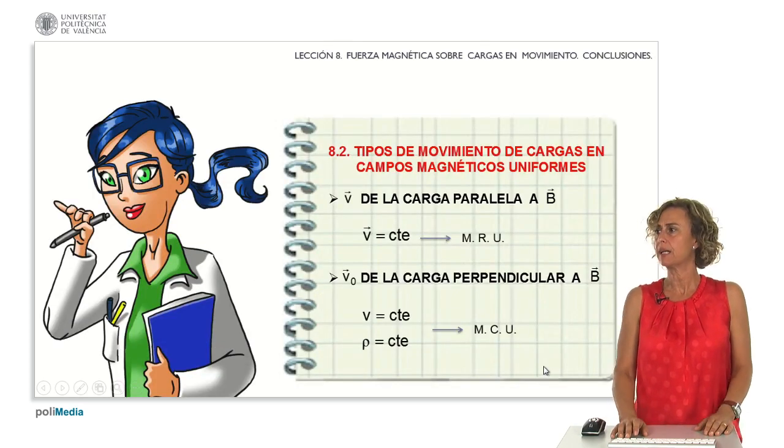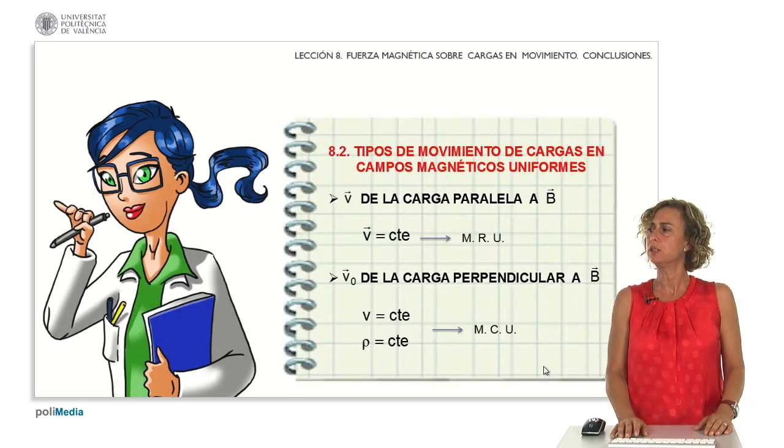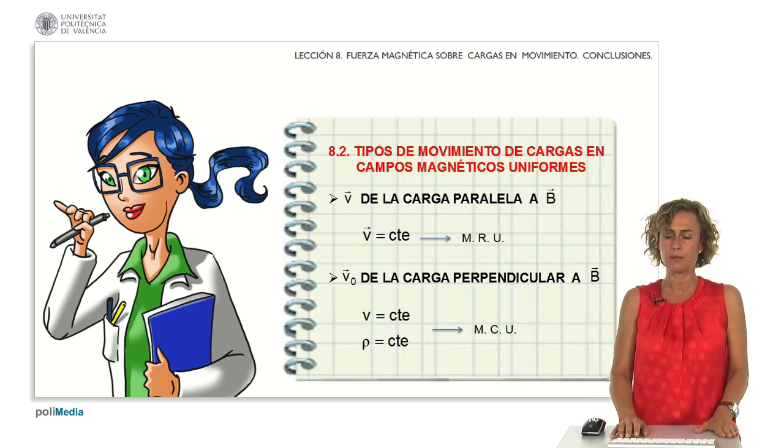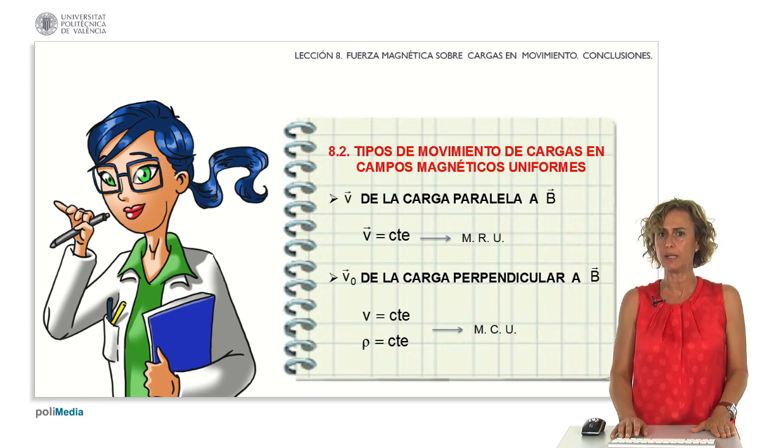In this class, we've observed that when a charged particle's velocity aligns parallel to the magnetic field, it undergoes uniform rectilinear motion. Conversely, when the velocity is perpendicular to the magnetic field, the particle follows a path of uniform circular motion. That concludes our lesson for today. See you in the next class.